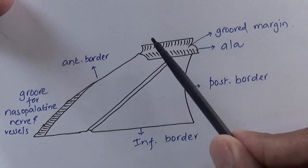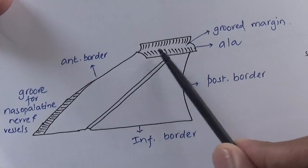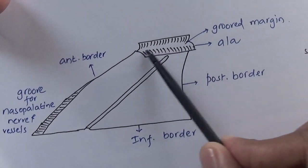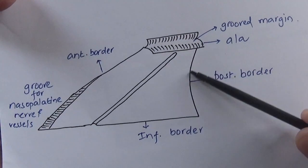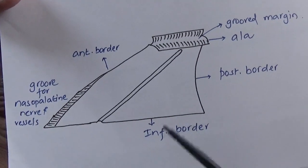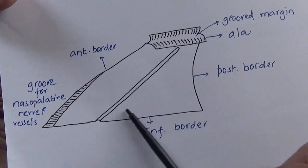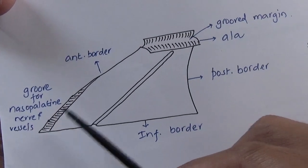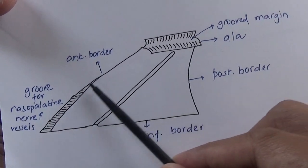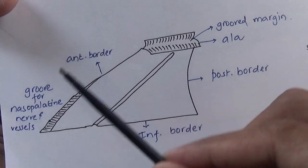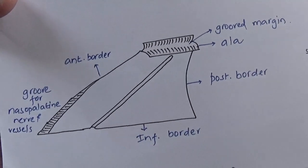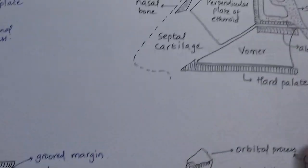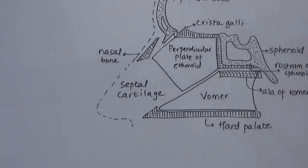Here you can see there are two diverging alae, and in between these two there is a groove — that is termed the superior border. The posterior border is free. The inferior border is related to the hard palate, and the anterior border is attached to the ethmoid and the septal cartilage.